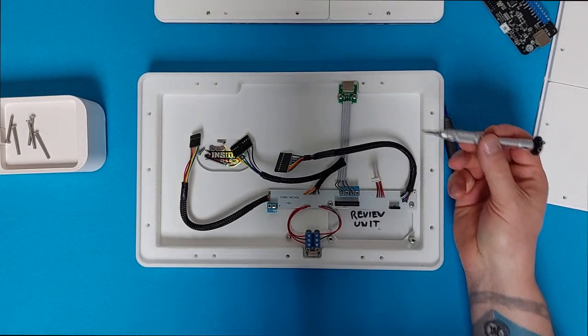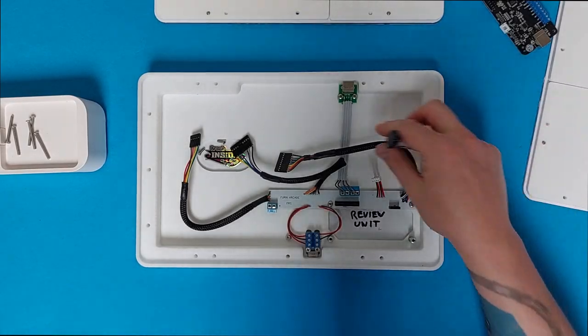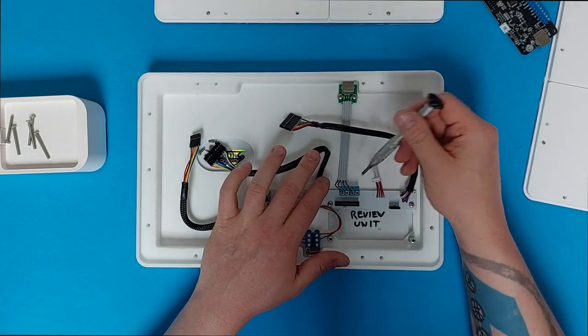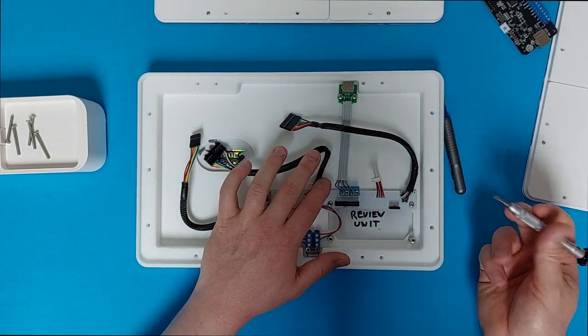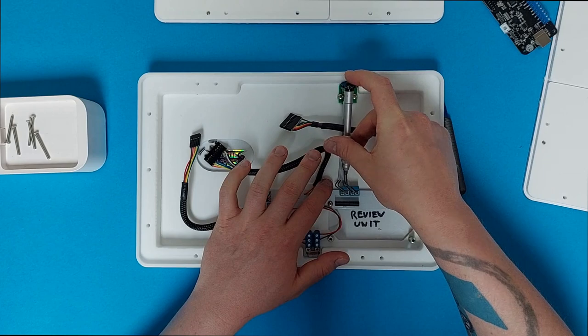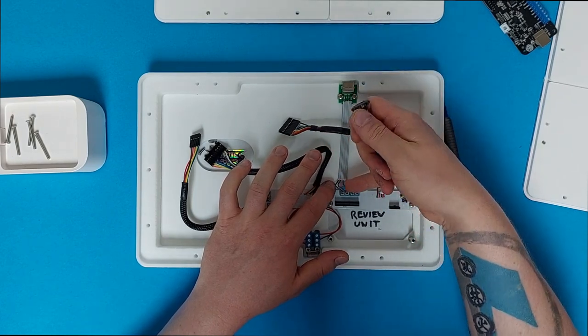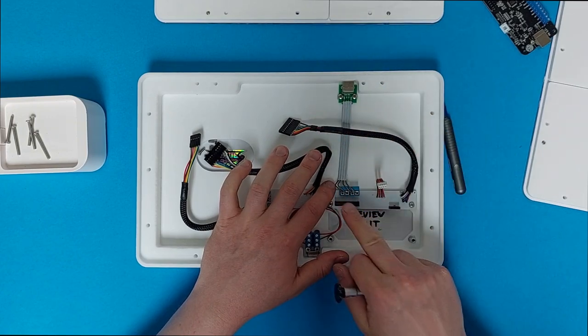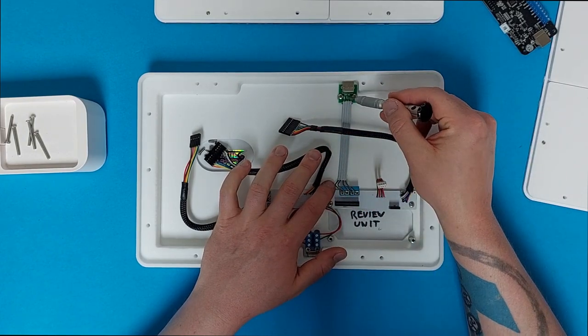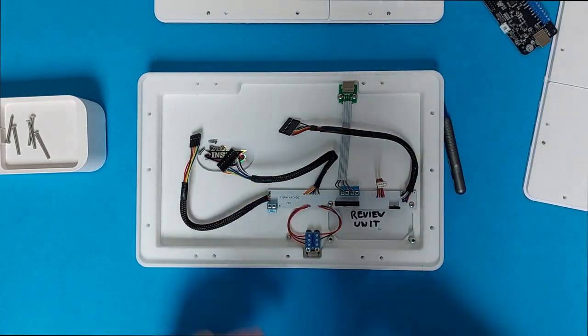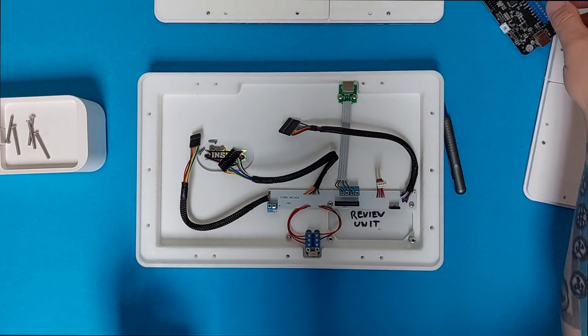The only other thing that might be something you need to change is the USB port here, which you might at some point replace. That's as simple as four screws here that will remove the USB from the breakout board and obviously the two screws here, but that should be fairly straightforward.